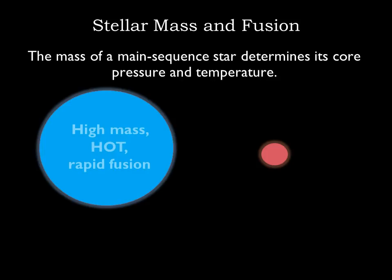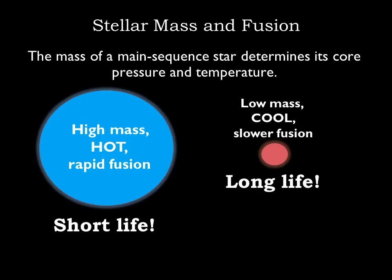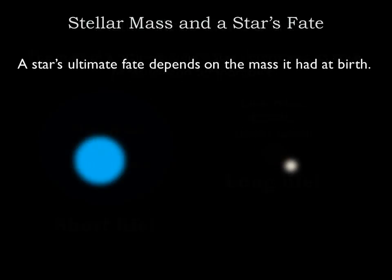Main sequence stars with large masses have much greater luminosities than low mass stars, and they fuse hydrogen into helium at a much faster rate. A star's mass also determines what happens when the star finally exhausts its core supply of hydrogen — it's the mass that determines whether it eventually becomes hot enough to fuse helium or heavier elements.